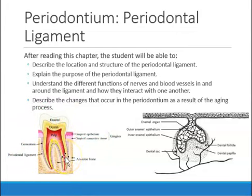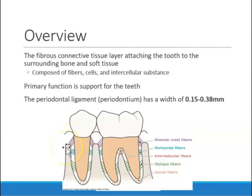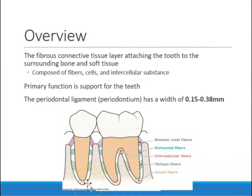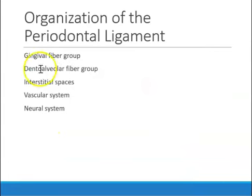The periodontal ligament fiber is one of the four tissues of the periodontium surrounding our tooth. When looking at the periodontal ligament fibers microscopically — those between the bone and the cementum — they contain fibers, cells, and intracellular substances. The main reason we have these fibers is to keep our teeth anchored into our jaw. The width of the periodontal ligament fibers is very small: 0.15 to 0.38 millimeters.